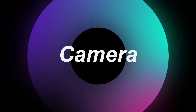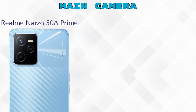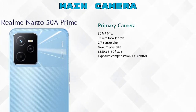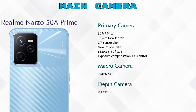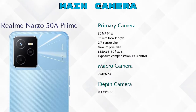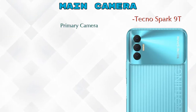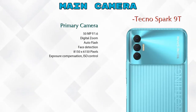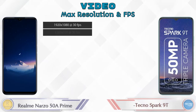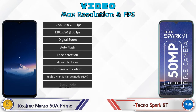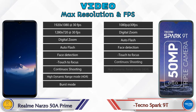Now let's talk about cameras. The 50A Prime has three rear cameras: a primary camera, a macro camera, and a depth camera. The Spark 90 also has three cameras: a primary camera and a QVGA sensor. For video recording, the 50A Prime has nine different feature options and the Spark 90 has seven.